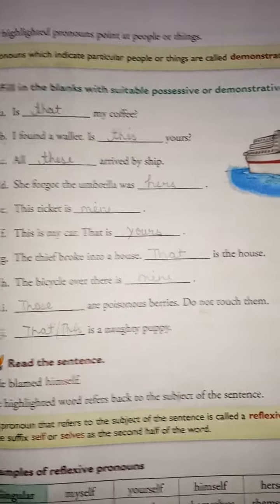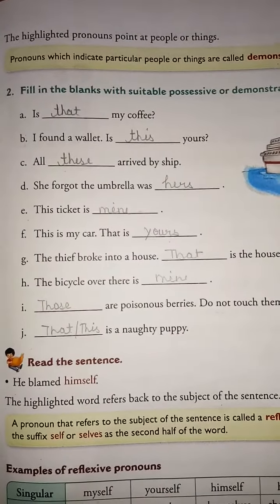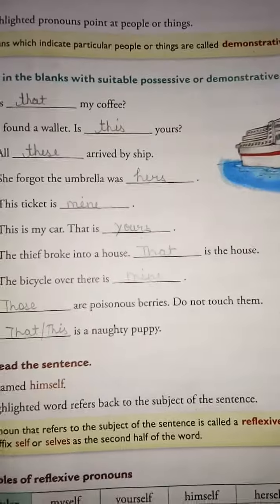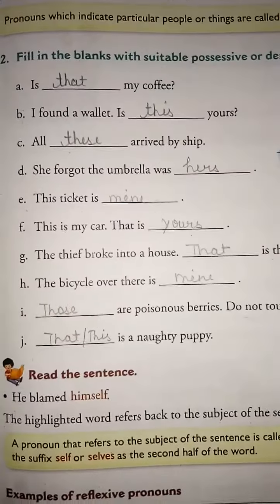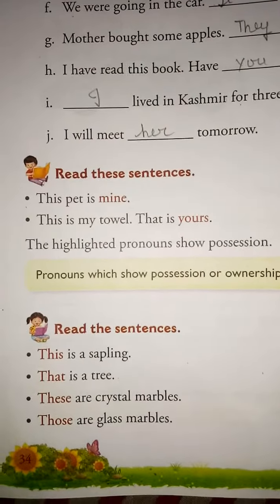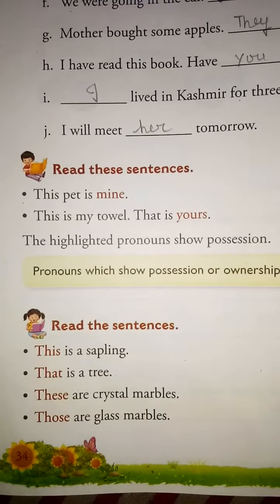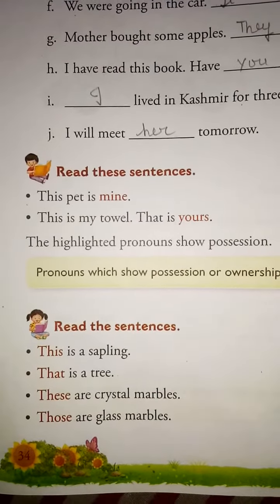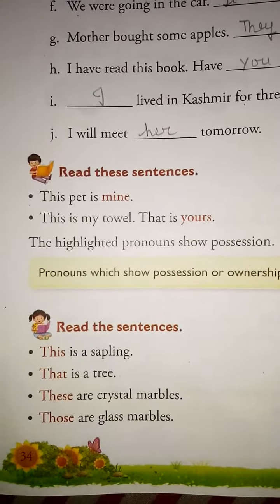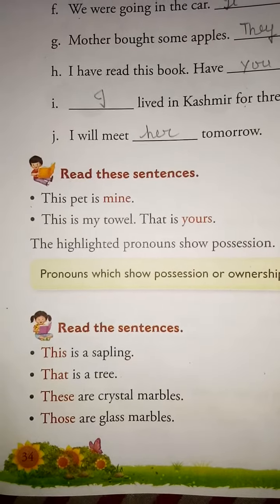Next is demonstrative pronouns. Pronouns which indicate particular people or things are called demonstrative pronouns. For example: 'this is a sapling,' 'that is a tree,' 'these are crystal marbles,' 'those are glass marbles.' These words are indicating particular people or things.